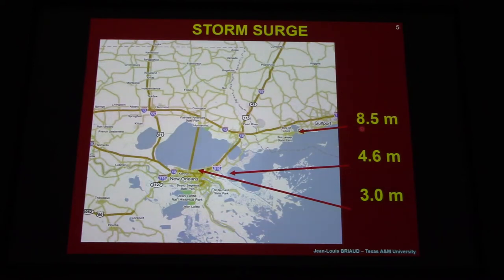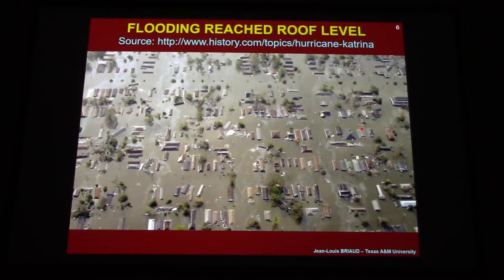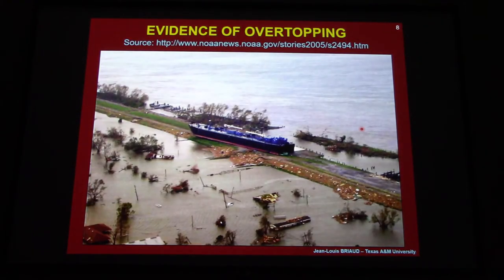You have a wall of water that's moving slowly - about 25 miles per hour - but this wall of water is rising 8.5 meters, so that's a three-story building of water coming at you. Here are some of the results of this flooding reaching rooftop levels, ships on top of highways.